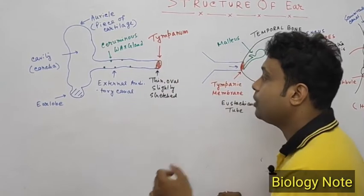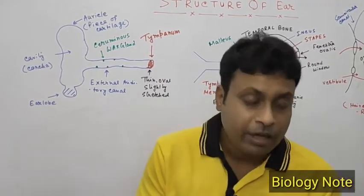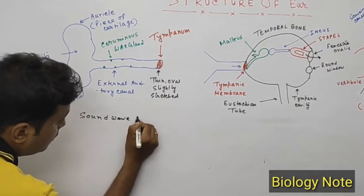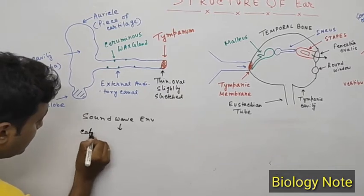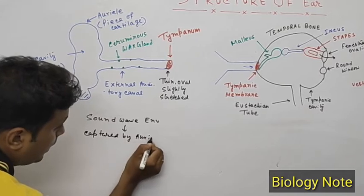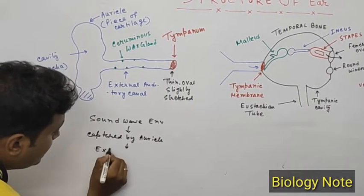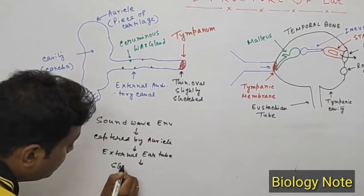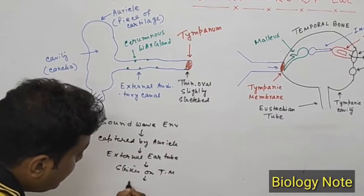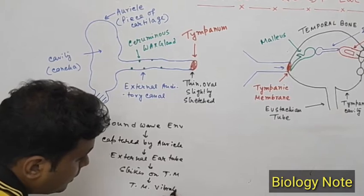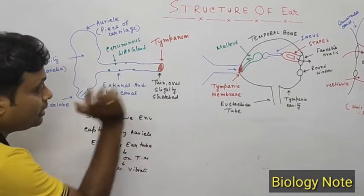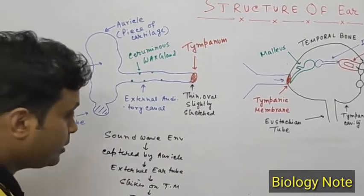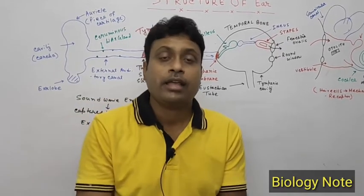The function of the external ear is to capture sound waves from the environment via the auricle and convey them into the external ear canal. The sound wave then strikes the tympanic membrane, causing it to vibrate. The tympanic membrane is a thin, oval, and slightly stretched structure that marks the end of the external ear.